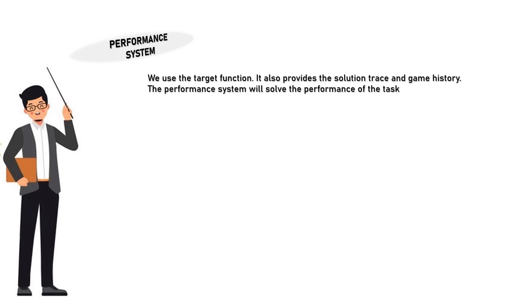Noting it shortly: performance system uses the target function, it also provides the solution trace and game history. The performance system will solve the performance of the task. Critic will produce a set of training examples. In checkers board example: (b1, Vtrain(b1)) and (b2, Vtrain(b2)), and so on, then ordered pairs (b, Vtrain(b)). Generalizer will take a training example that has an input and it will generate a hypothesis that has an output.